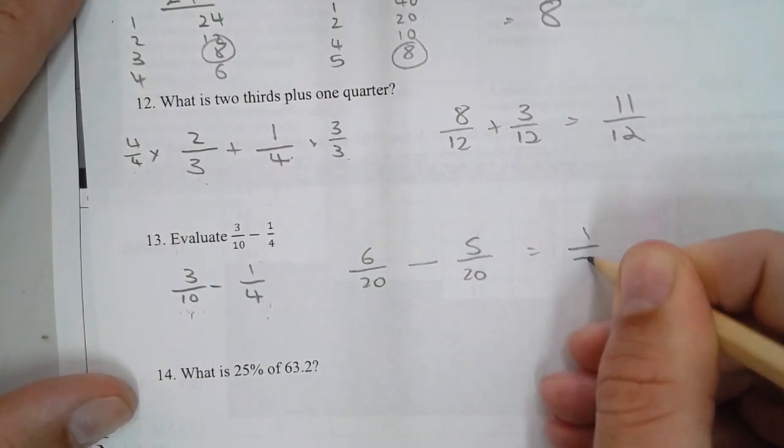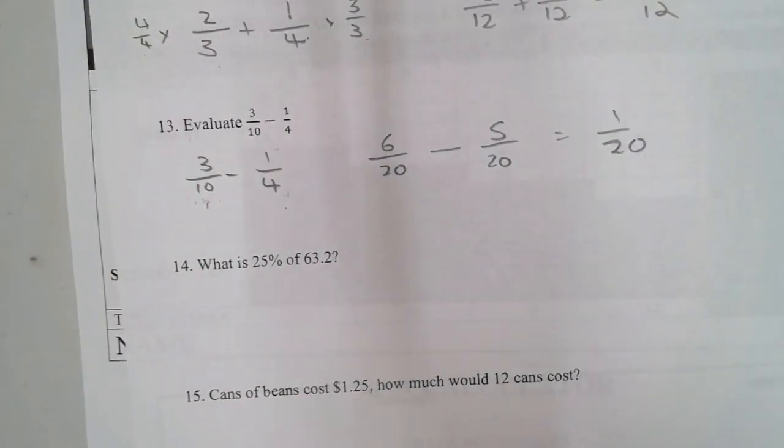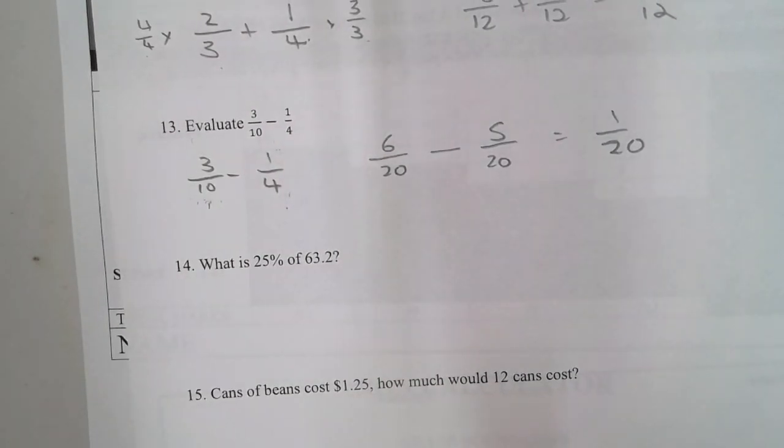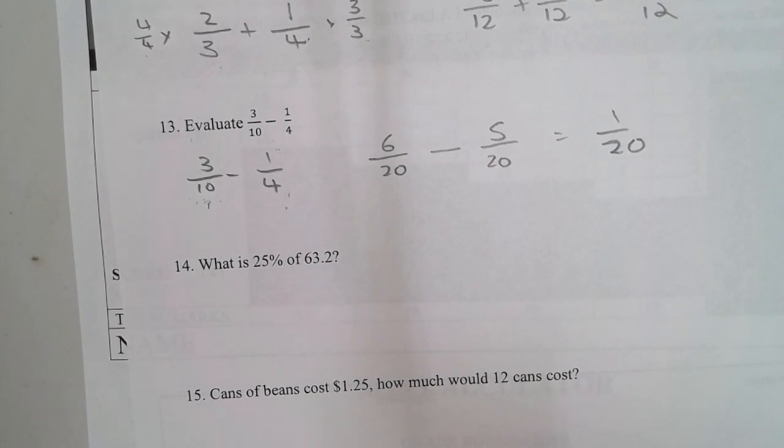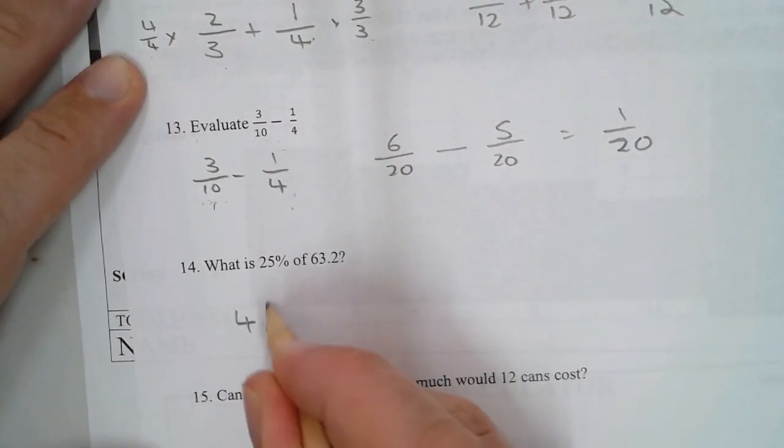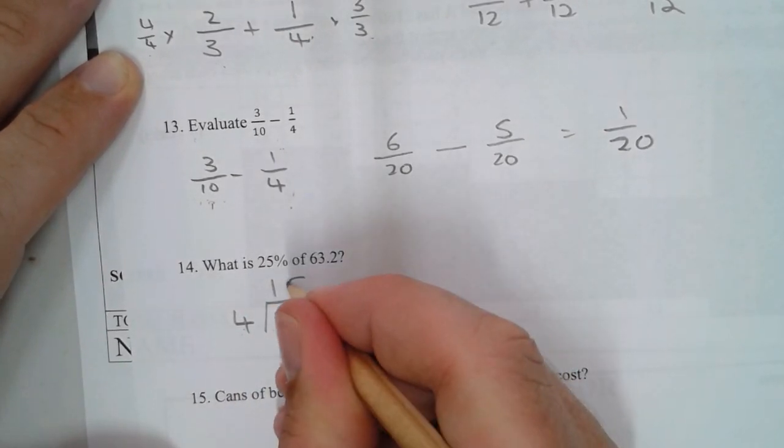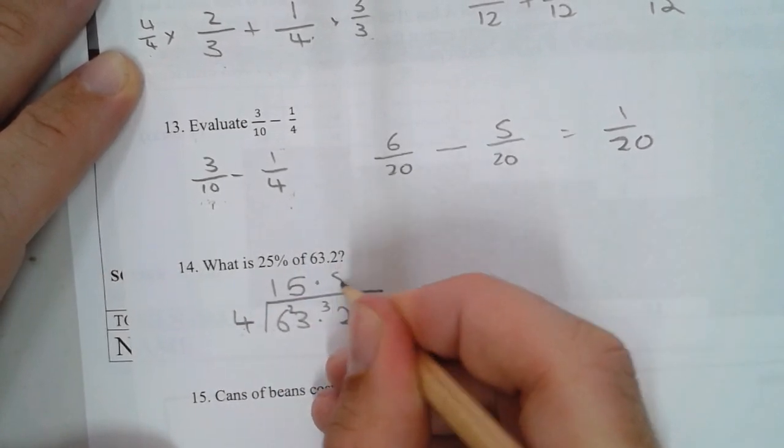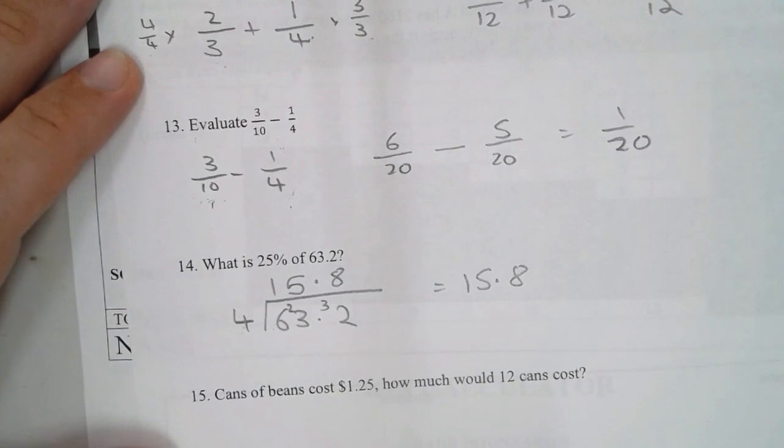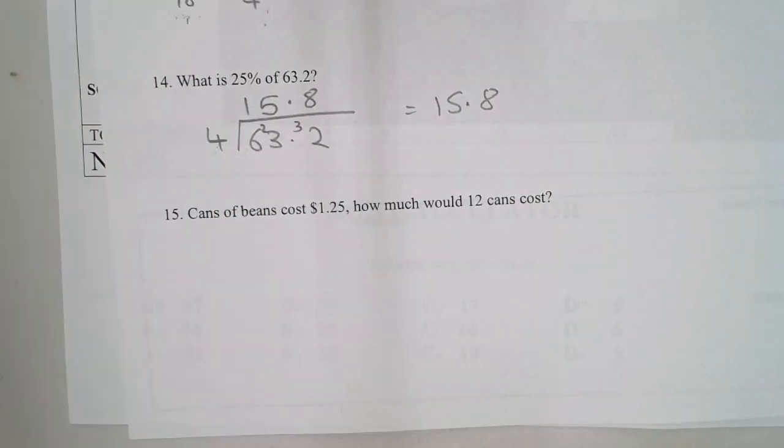Number 14: what is 25% of 63.2? 25% is the same as a quarter, so we could just divide this by 4. 4 goes into 6 once, carry the 2. 4 goes into 23 five times, carry the 3. 4 times 8 is 32. The answer is 15.8.